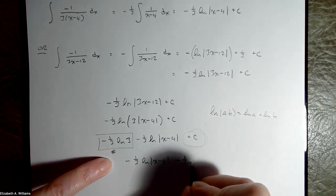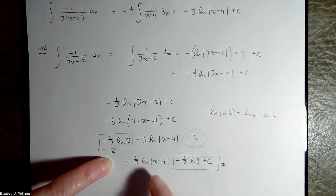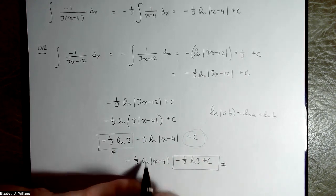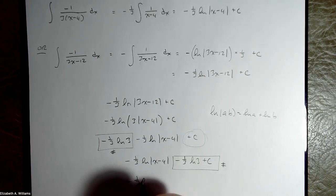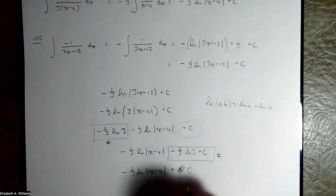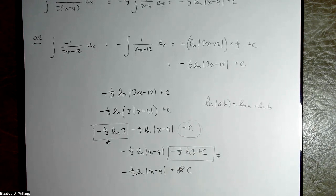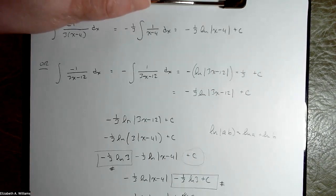Well, minus 1/3 ln 3 is just a number. I can merge it with that arbitrary constant and rename the arbitrary constant. So this gives me minus 1/3 ln (x minus 4), minus 1/3 ln 3 plus C. That's still just some number. What matters is having this expression in x and then an arbitrary constant tacked on. So you can rename that. We tend to just call it C all over again. That's why the two different methods take you to the same result. I hope that's helpful. Thanks for watching.